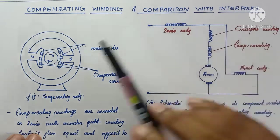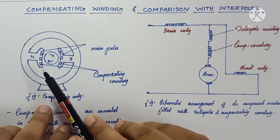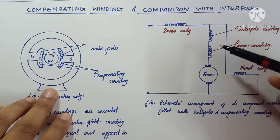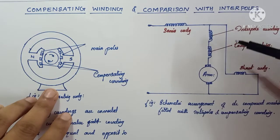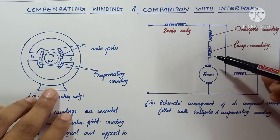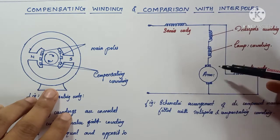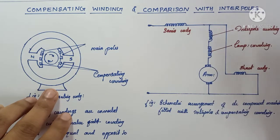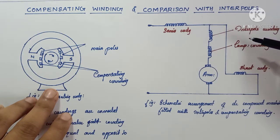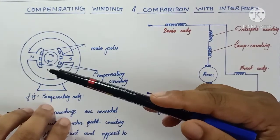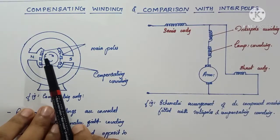Armature reaction is reduced by compensating windings, and since they are connected in series with the armature windings they also help to reduce poor commutation — providing further support to the interpoles for good commutation in DC machines. Both the interpoles and compensating windings can be used to improve commutation, and compensating windings will also reduce the demagnetizing effect of armature reaction.